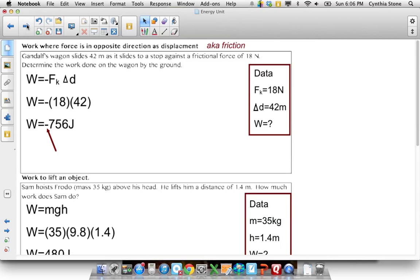Sometimes you have force in the opposite direction as the displacement, and that means friction. So we know Gandalf's wagon slides 42 meters. It's sliding to a stop against a frictional force of 18 Newtons. Determine the work done by the ground on the wagon. And that specifically is the language, on the wagon by the ground, because the ground is applying the friction. So just write the givens, the formula, make sure there's a negative in there, substitute the numbers in. And pretty simple.